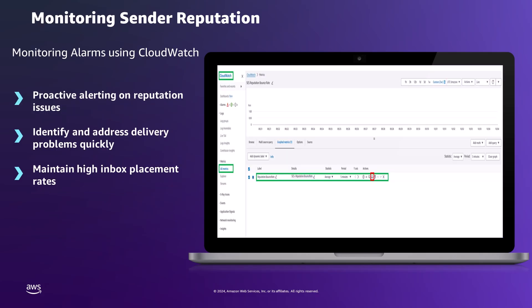We can also set up alarms in CloudWatch for monitoring SES sender reputation. Amazon CloudWatch offers extensive monitoring capabilities for email sending activities using Amazon SES. All the major key metrics — such as number of email sends, bounces, complaints, rejects, deliveries, and, if configured, even open and click-through rates — are available in Amazon CloudWatch. These metrics offer valuable insights into the performance and health of email campaigns.